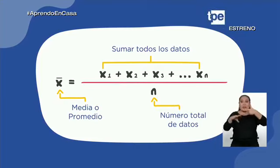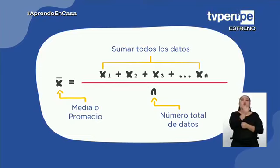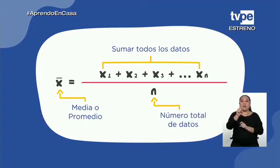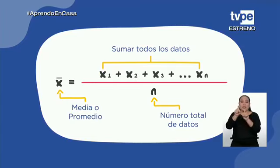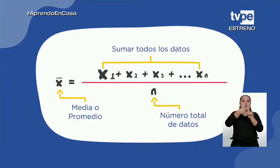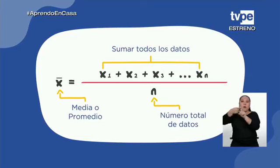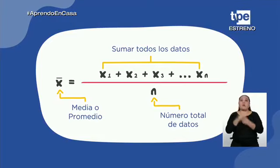Como vemos en la fórmula, cada uno de los datos se representa por una X con un subíndice que va indicando el número de datos que representa. Por ejemplo, X sub 1 representa el primer dato, X sub 2 representa el segundo dato. Así, la suma de datos inicia en X sub 1 y termina en X sub n, ya que son n datos. La cantidad total de datos es representada por n. Un cálculo muy sencillo, ¿verdad?